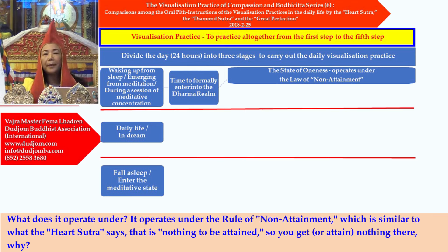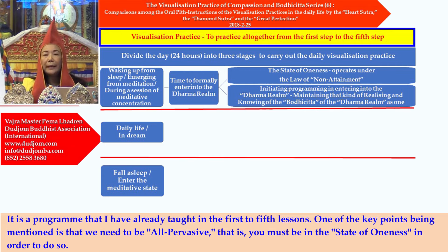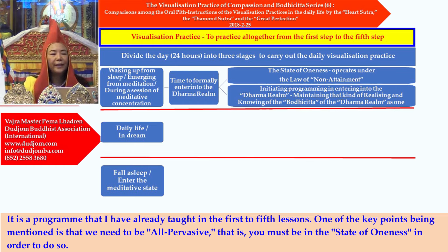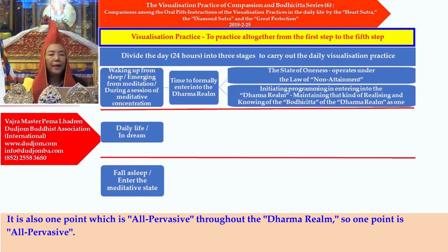What does the Dharma realm operate under? It operates under the rule of non-attainment, similar to what the Heart Sutra says — nothing to be attained, so you attain nothing there. Why? Because there is only one point. If you want to initiate the programming in entering into the Dharma realm, you should maintain that kind of realizing and knowing of the bodhicitta of the Dharma realm as one. One of the key points is that we need to be all-pervasive — you must be in the state of oneness in order to do so. One point is able to be all-pervasive throughout the whole universe and throughout the Dharma realm.